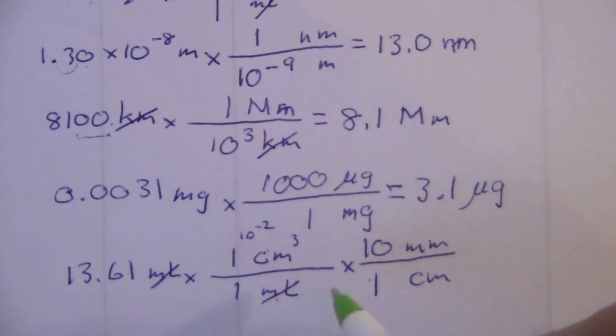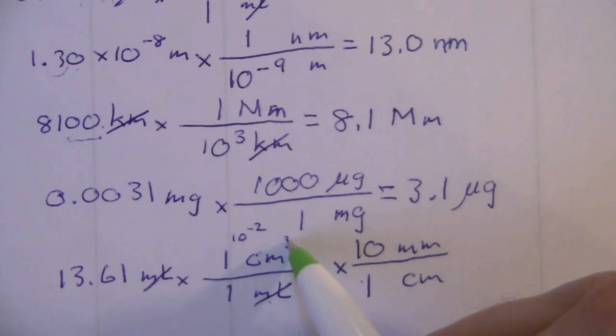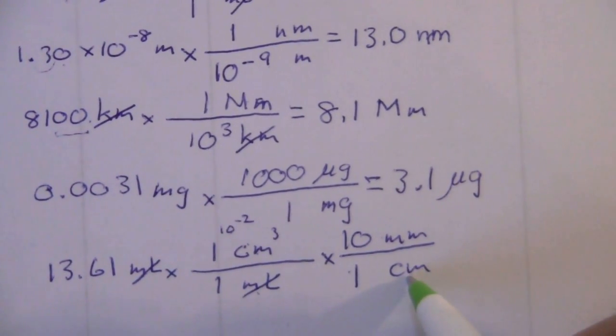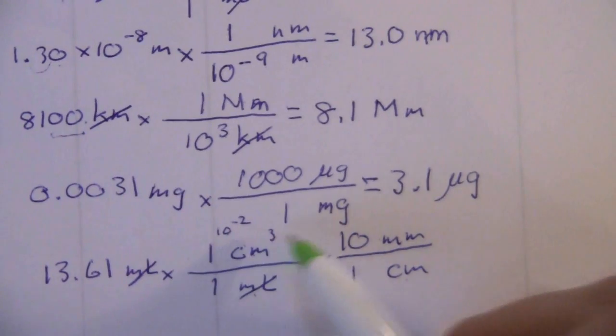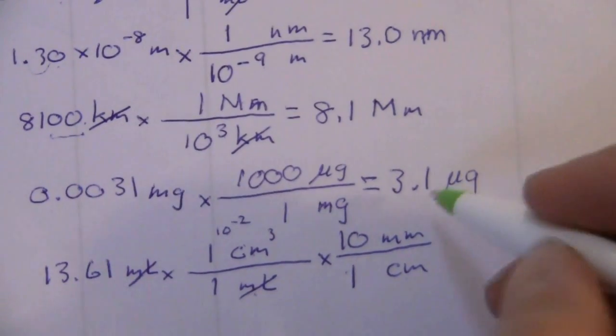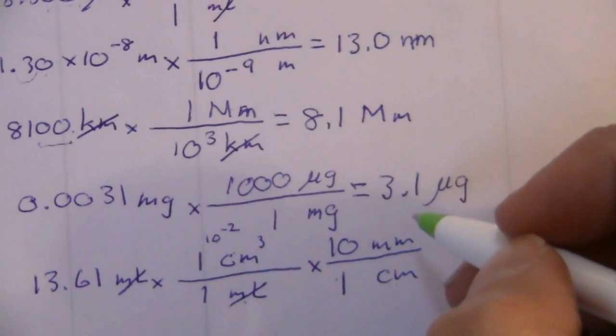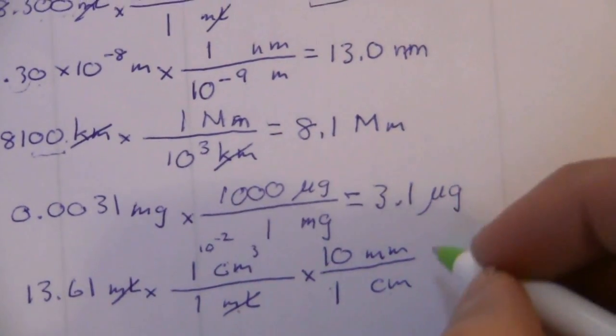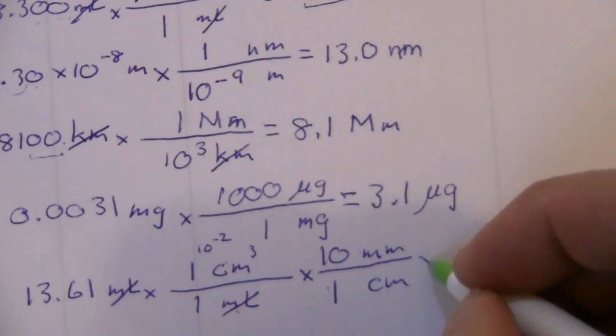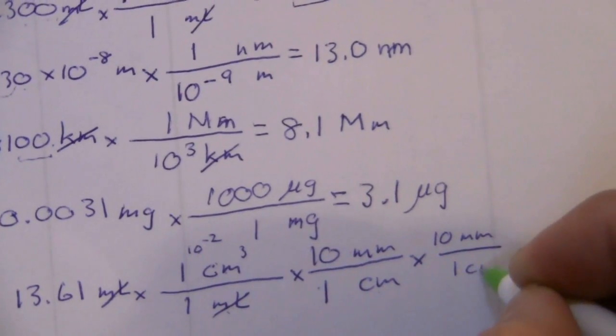We need centimeters on the bottom so that it will cancel: one centimeter, there are 10 millimeters. Now let's look at this. We have centimeters cubed. This will cancel one of those, but we'll still have two left over. So what we have to do is cube this whole factor.